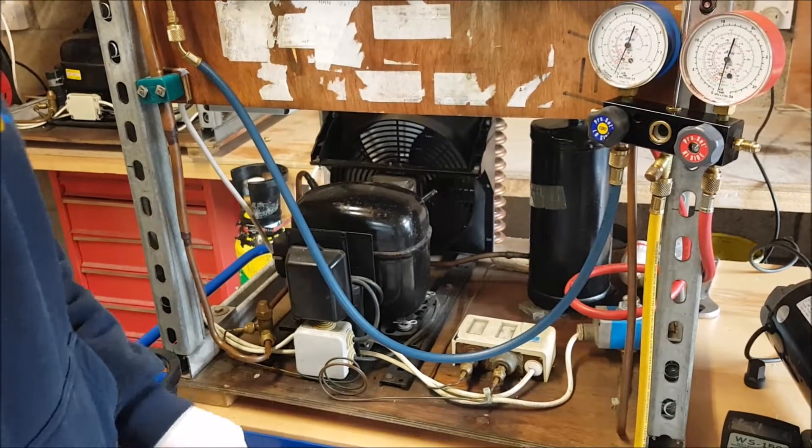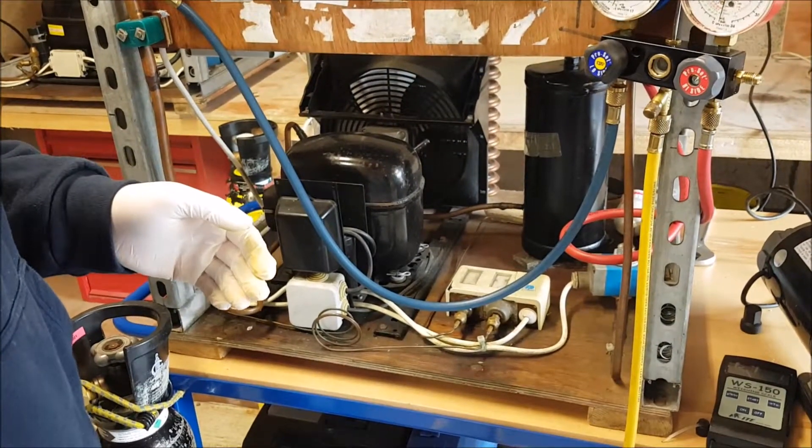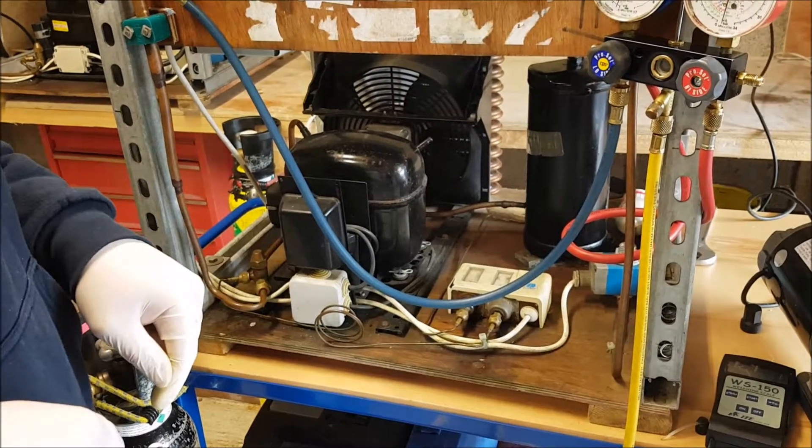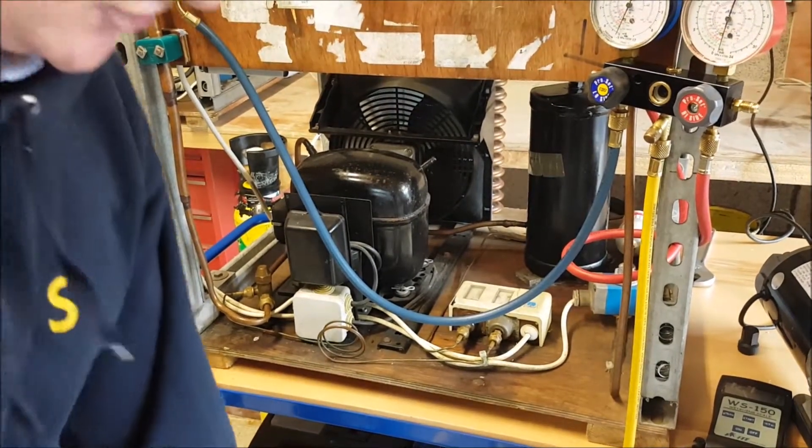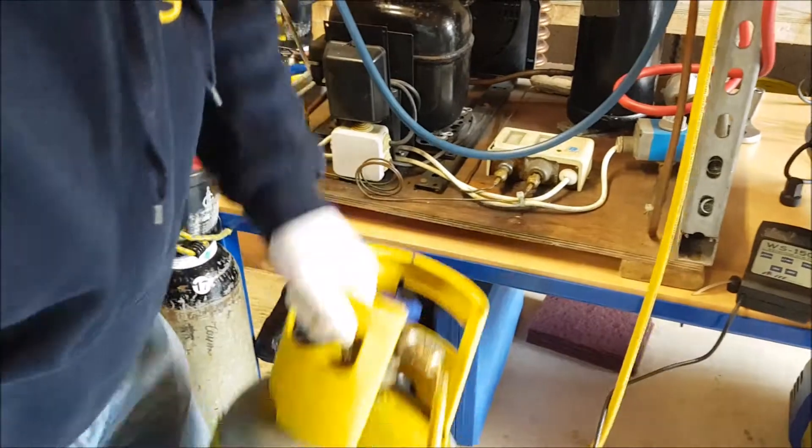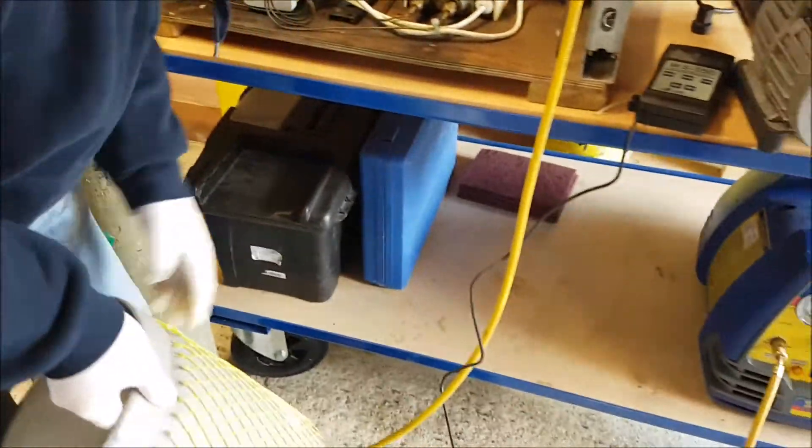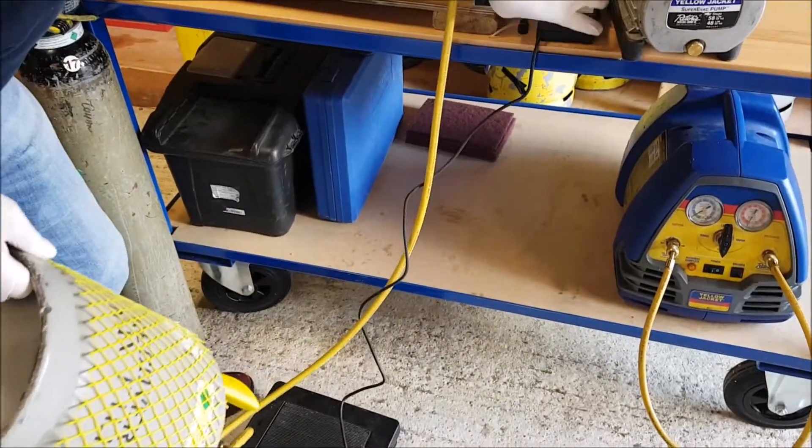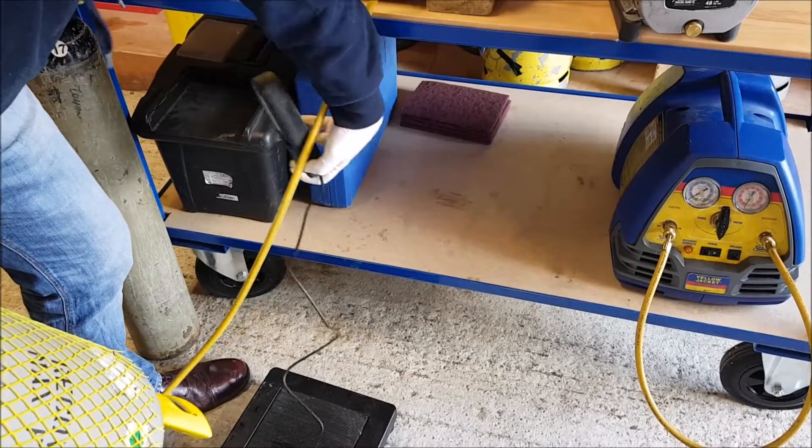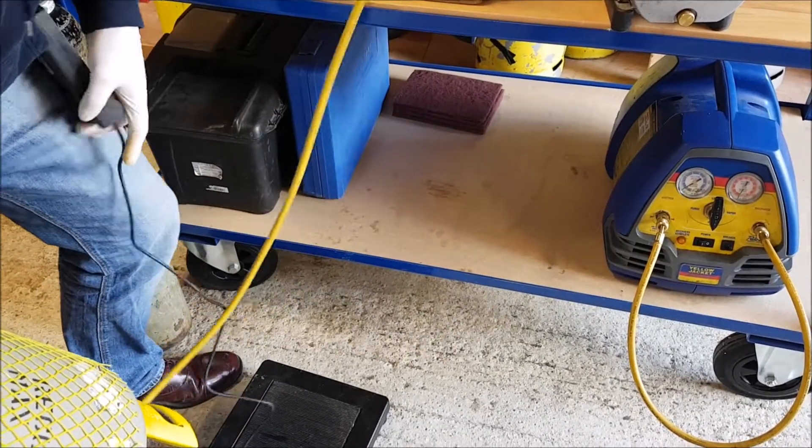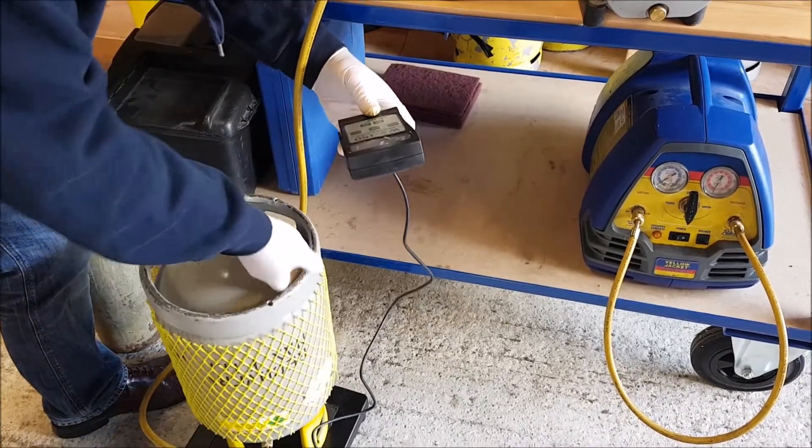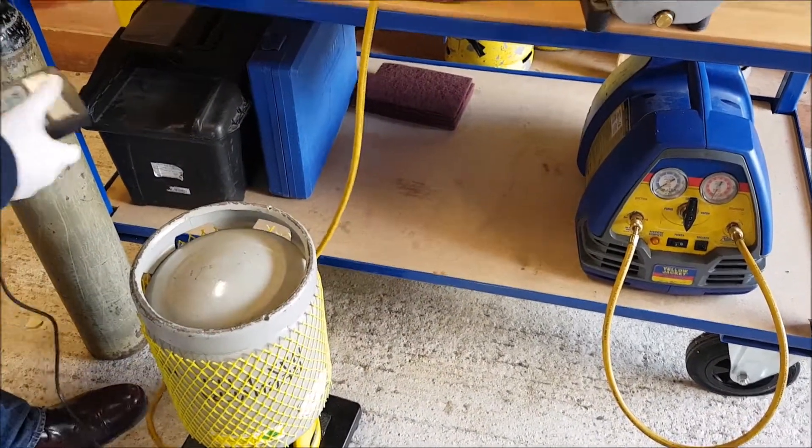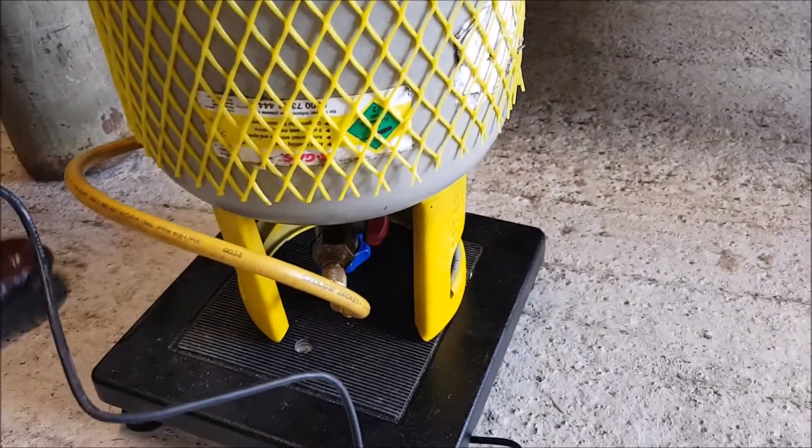That little purge was enough from my point of view. I'm happy that the system is free of air. Now the next thing I need to do is this is a zeotropic blend, it's 404a. You must liquid charge. In order for me to liquid charge in this particular bottle, I turn it upside down. By turning it upside down, my vapor port is now becoming a liquid port.